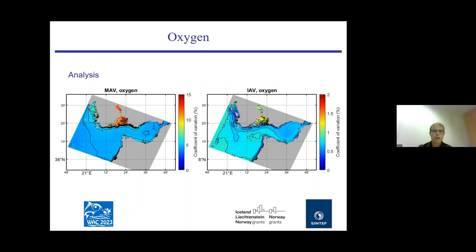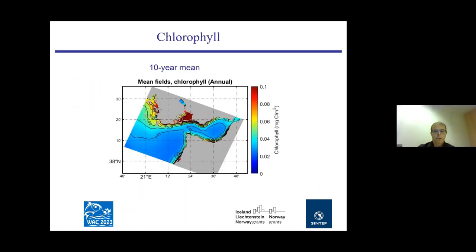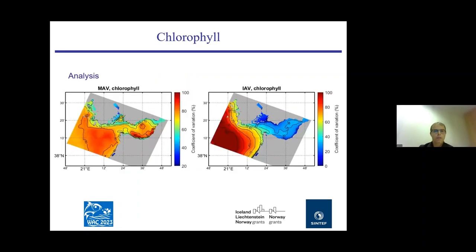For chlorophyll, the mean values and analysis show really high variability, particularly close to Patras city and that area, where there is also some river runoff contributing nutrients from the rivers.